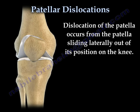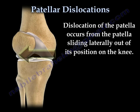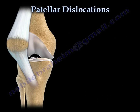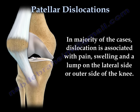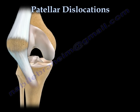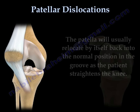Dislocation of the patella occurs from the patella sliding laterally out of its position on the knee. It may occur from a blow to the knee, acute trauma, or severe twisting of the knee. In the majority of cases, dislocation is associated with pain, swelling, and a lump on the lateral side or the outer side of the knee. The patella will usually relocate by itself back into the normal position in the groove as the patient is straightening the knee.